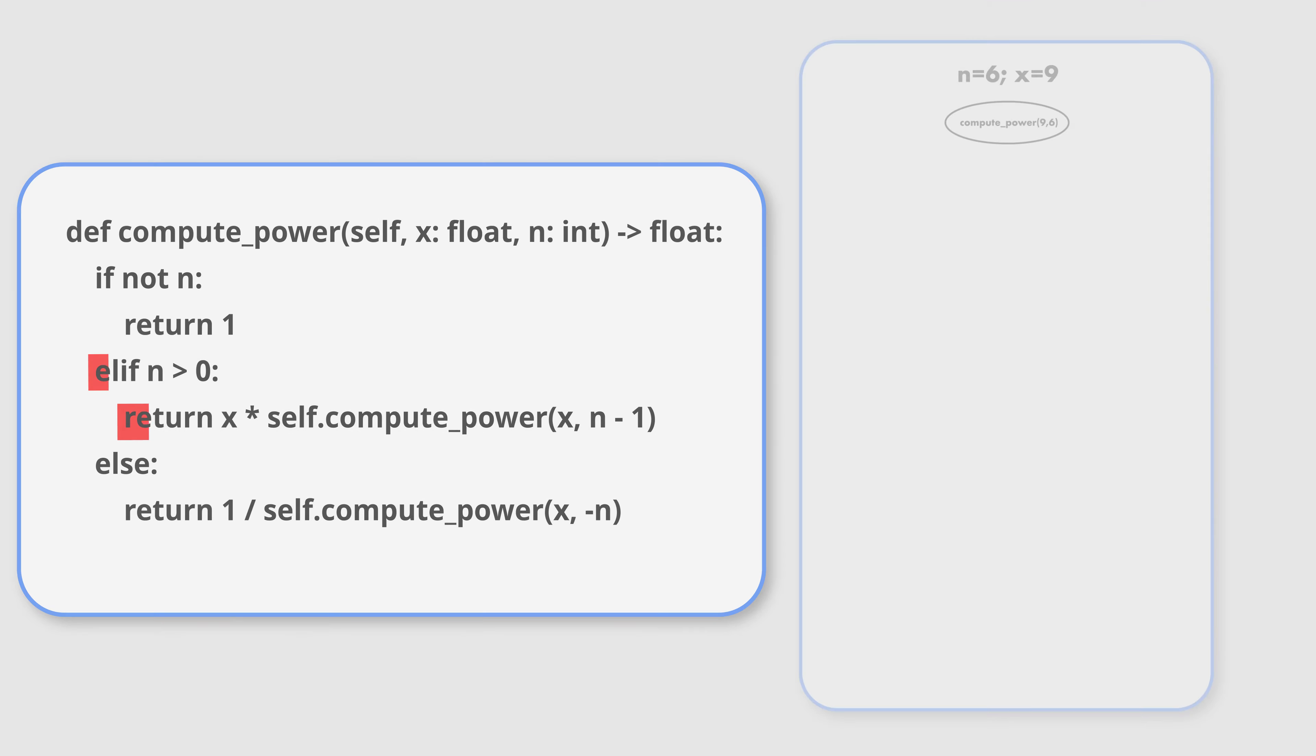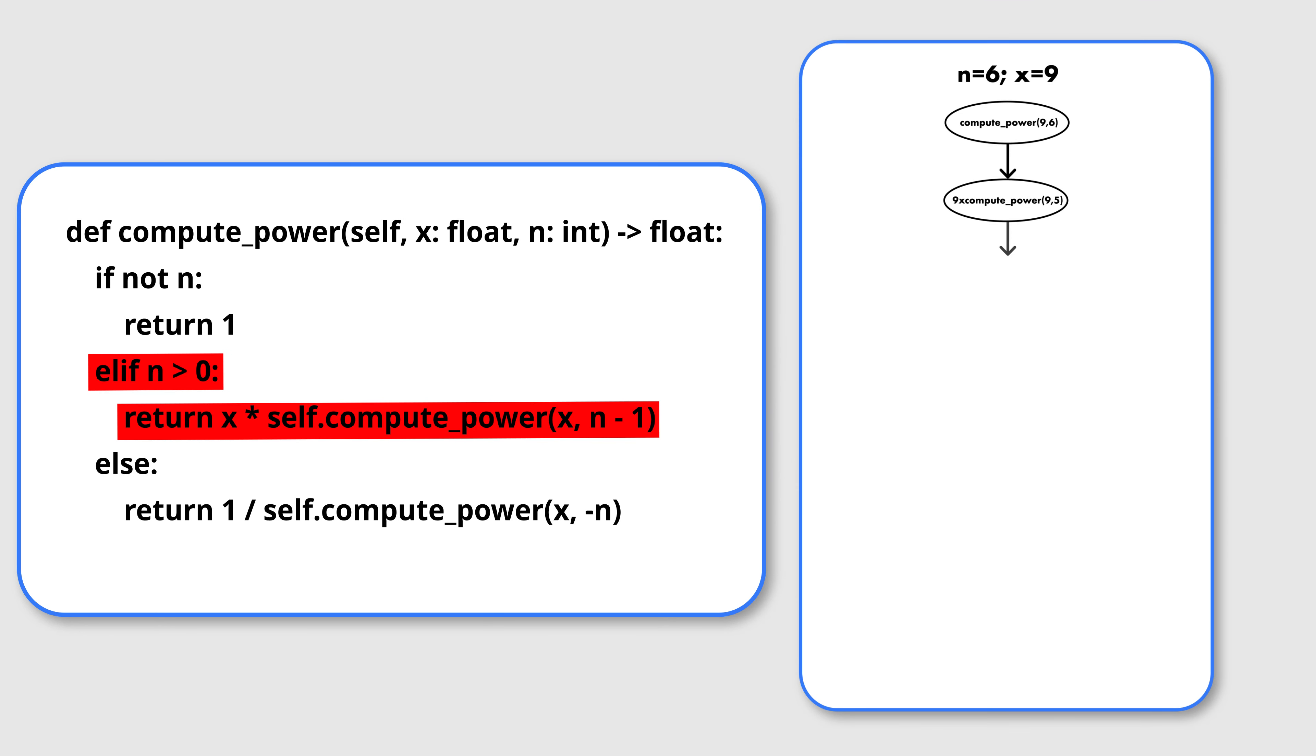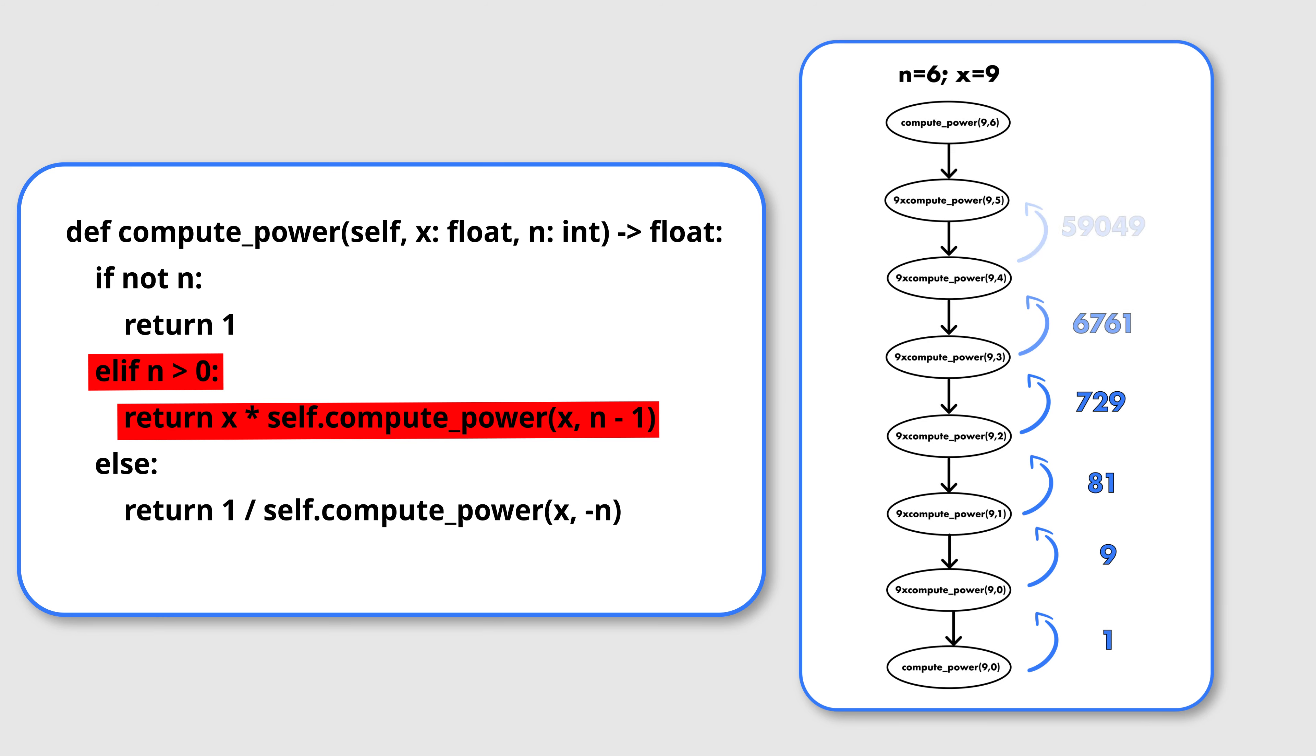If n is a positive number, then we want to get closer to our base case and reduce the decision space by exploring what the value of the number to the power of n minus 1 is. Then, the value of the number to the power of n would be the number itself multiplied by the number to the power of n minus 1.